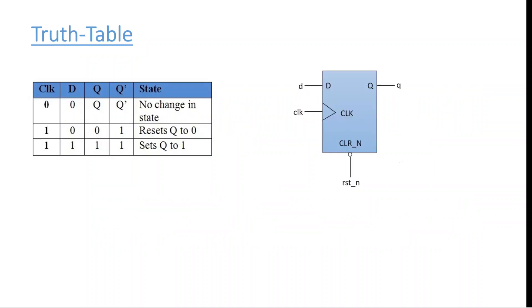We'll see the truth table and symbol for the D flip-flop. Here we are discussing the positive edge D flip-flop. At zero clock, whatever value the input has, the output will show no changes — it will be in the unchanged state. At the passage of the clock, when D is zero the output is zero, and when D is one the output is one. The symbol shows input D, the clock, the output Q, and an active low reset.